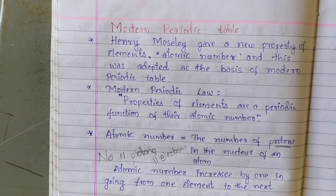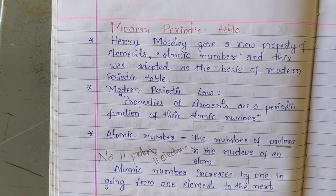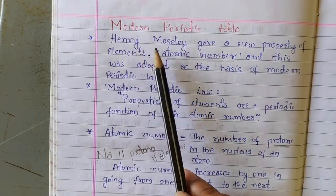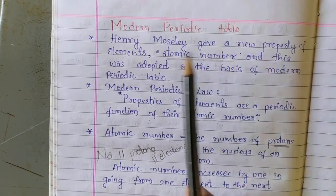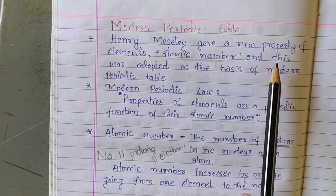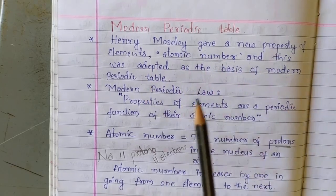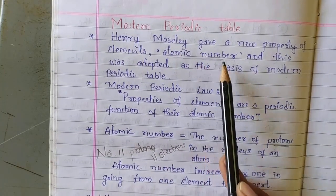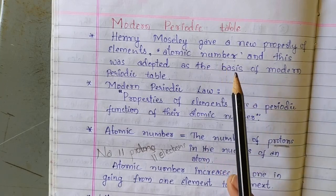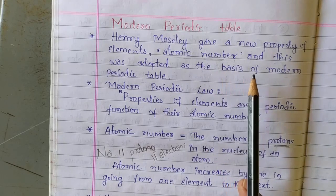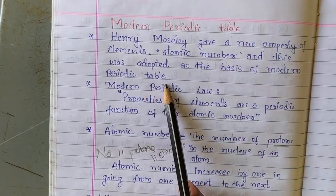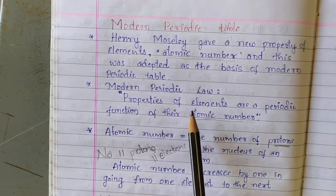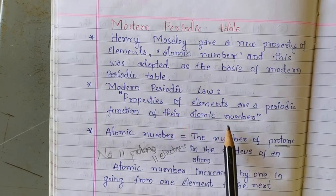Hello children. In the previous class we discussed about the Mendeleius periodic table, and today's class will discuss about the modern periodic table. This modern periodic table was proposed by Henry Moseley. He gave a new property of elements which is atomic number, and this was adopted as the basis of the modern periodic table.